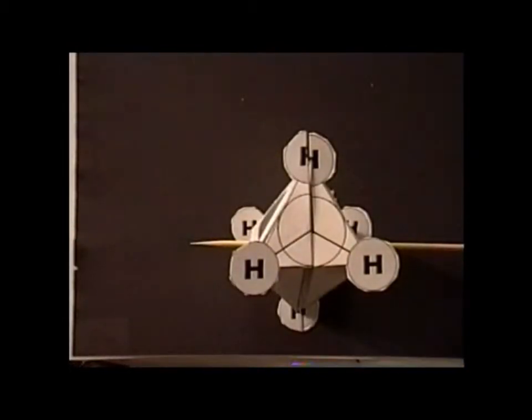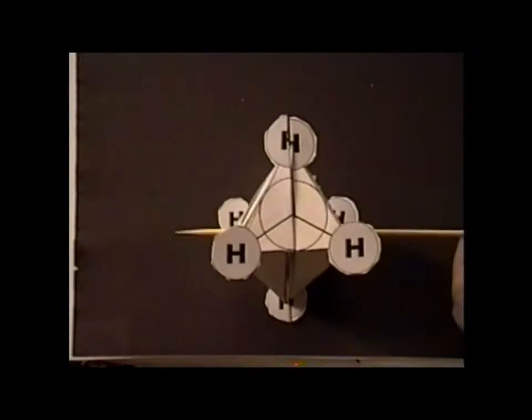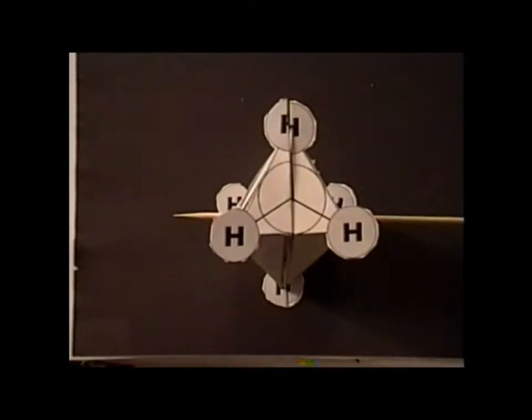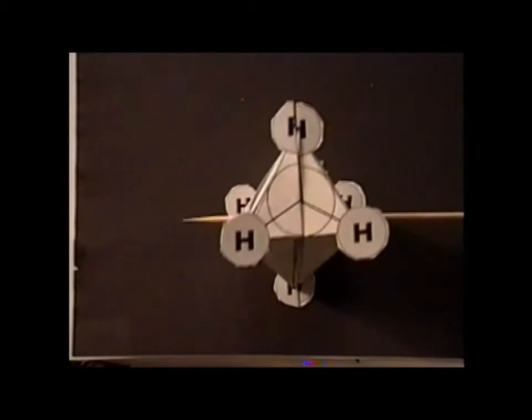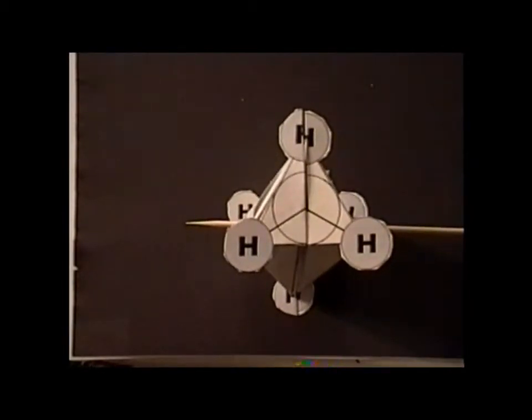Now we can take a look at the staggered conformations of ethane. Recall that we had said that this belongs to the point group D3D.